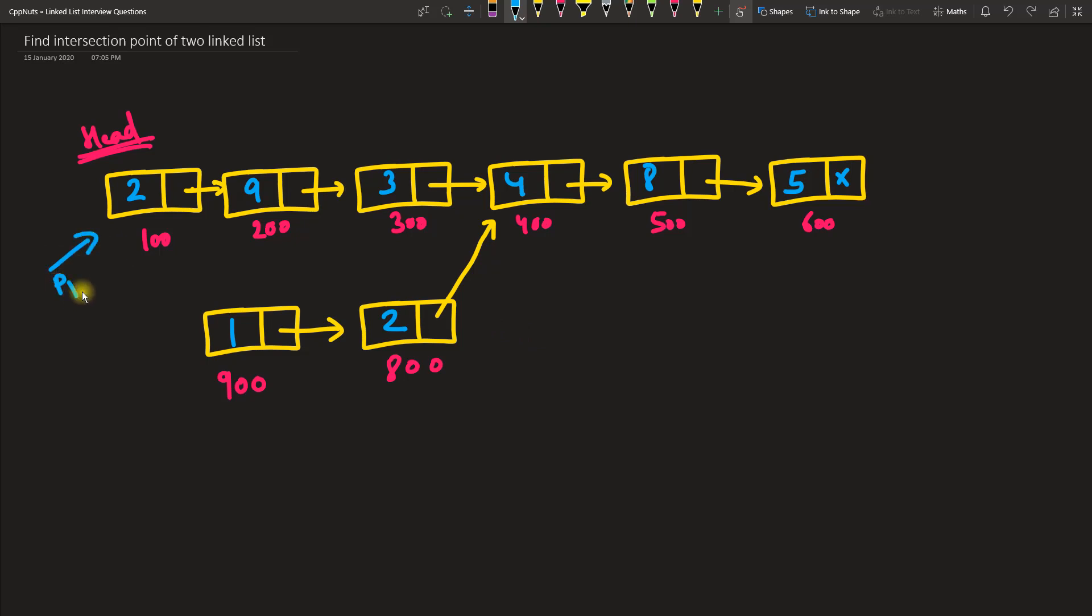Here one thing is important - there are two linked lists. This is p1 and this is p2. This is your first pointer which is pointing to the head of your first linked list which starts here, and another one starts here, but there is this intersection.